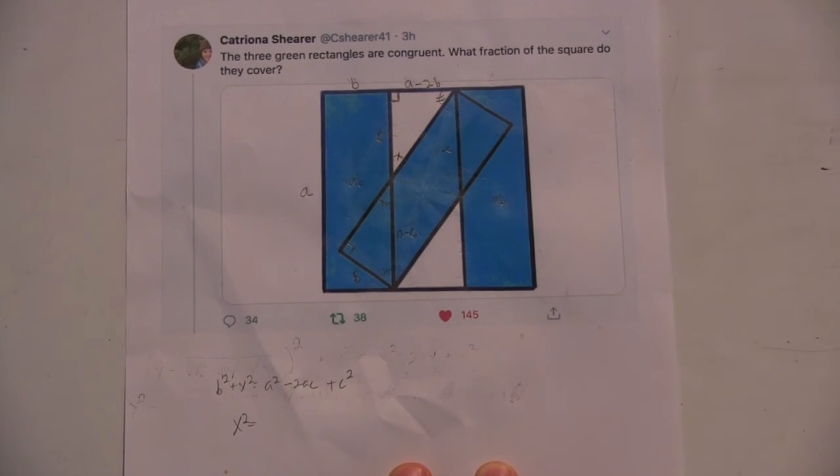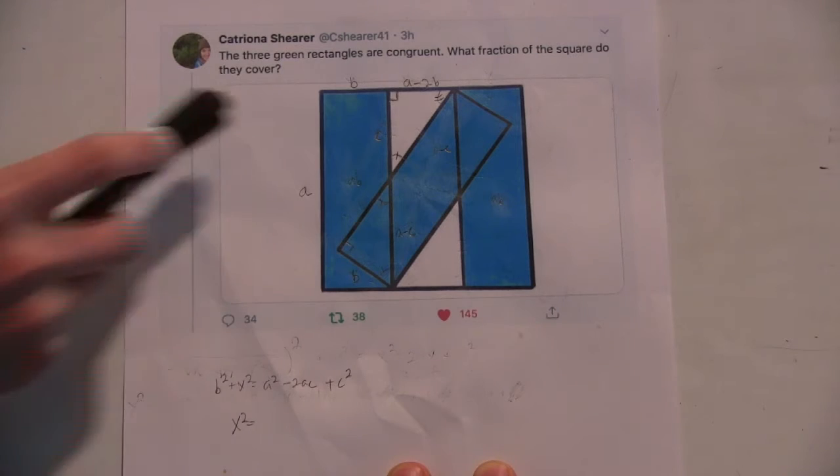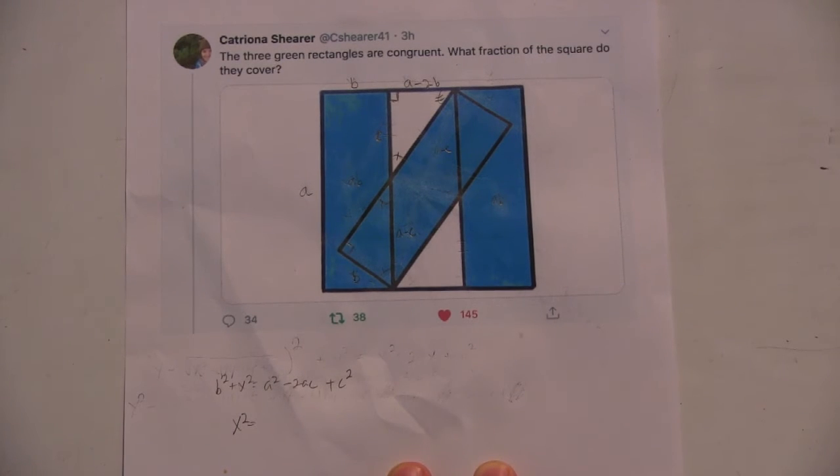But originally you said what was the area of this square? A squared. Okay. But you think maybe breaking it up into A and B. Mm-hmm. Alright. Okay. And then I guess also from there you could get an A in terms of B as well. Yeah, you could. Alright.